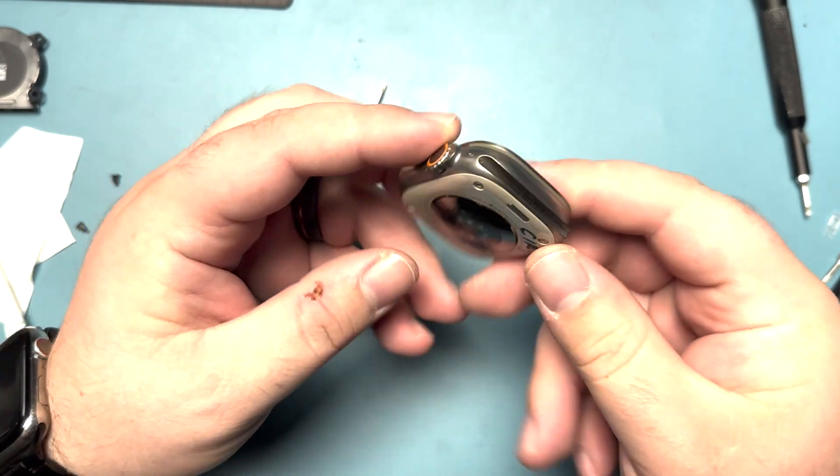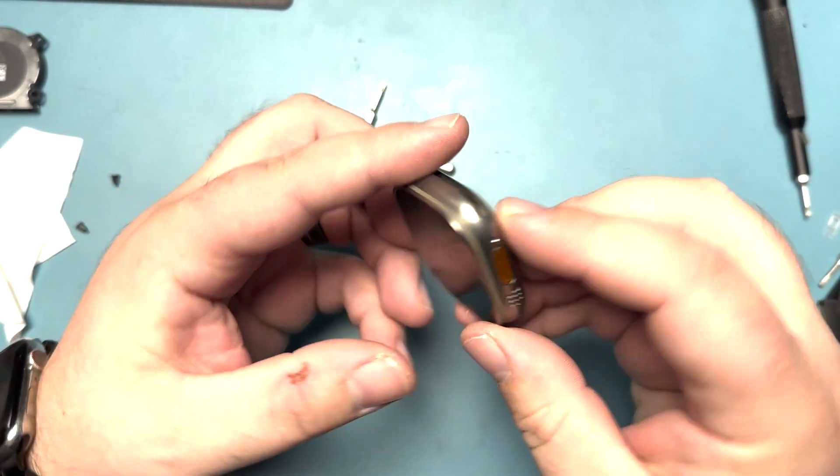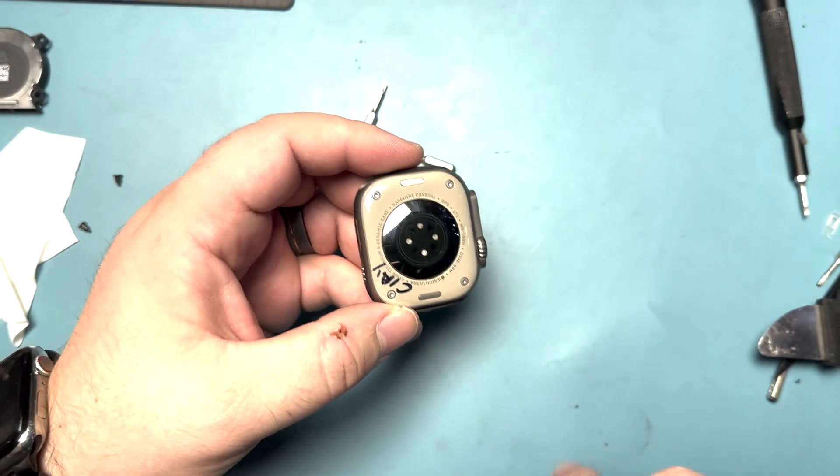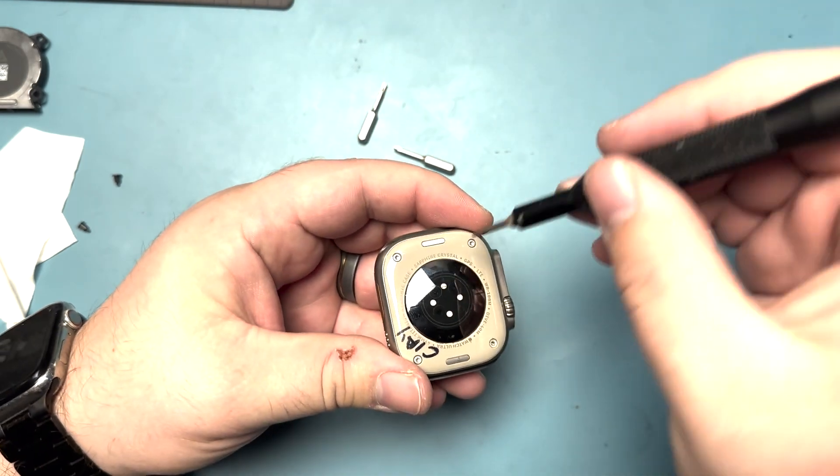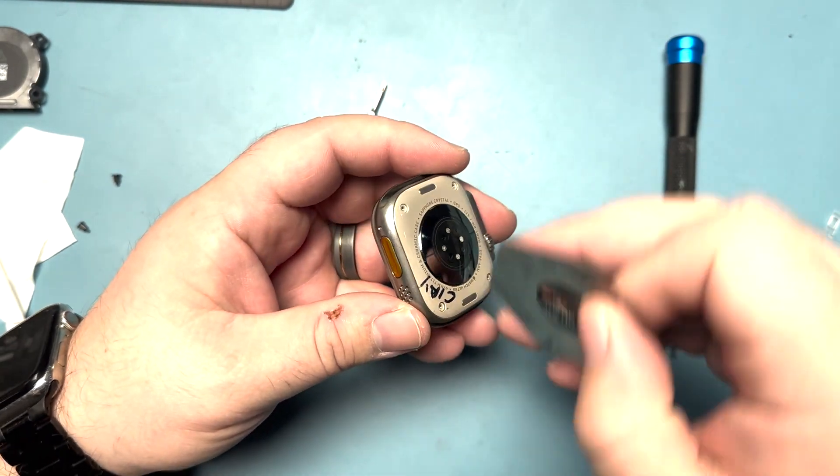Here we've got this Ultra. Given that it was wet on the charger, I'm going to start here on the back. We'll grab our P5 and take out the four Pentalobe screws. Maybe the water just got into the back somehow.